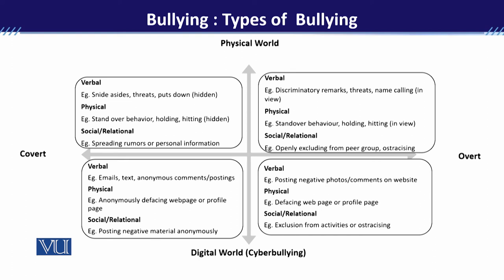When we talk about the digital world and cyber bullying at the covert level, emails and texts will be sent anonymously in a hidden form. Similarly, if someone wants to spread a rumor about someone, they will also do it anonymously. At the overt level, all verbal remarks, threats, and name calling will happen openly in the presence of others, where you can see who is saying those things about you. Similarly, physical acts like holding, snatching, or hitting will be done in front of you — you can see the person and others can see it too, meaning the behavior is observable at the overt level.